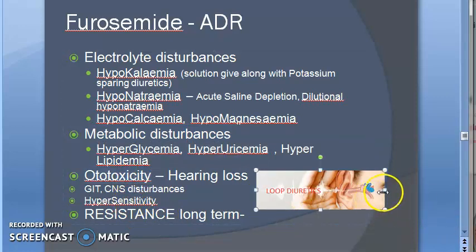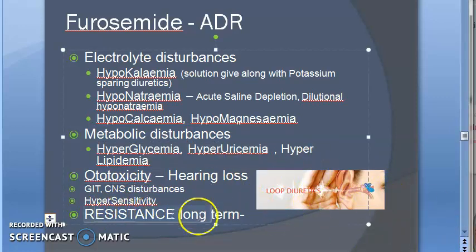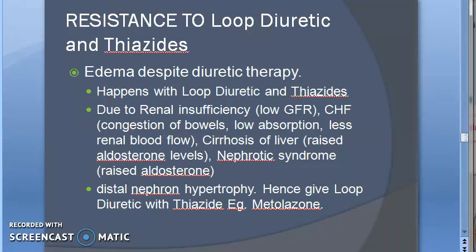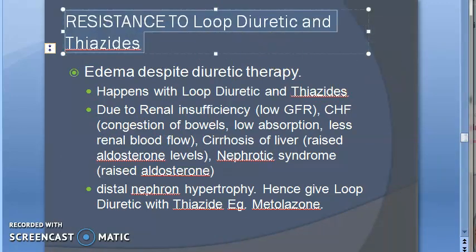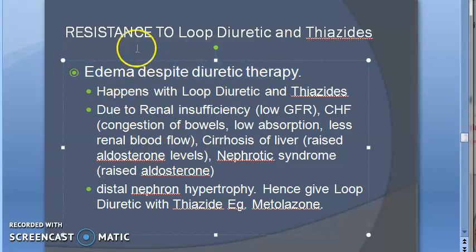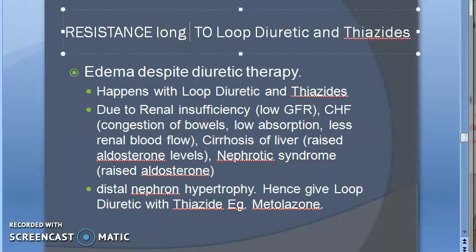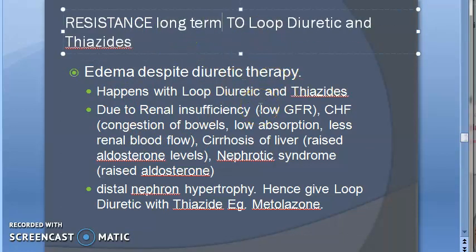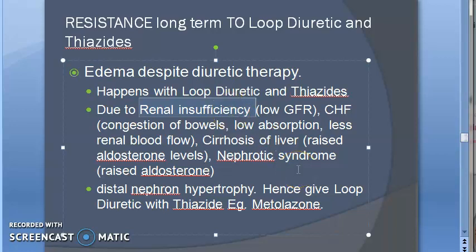Ototoxicity — hearing loss — can happen because of the impaired electrolyte balance caused by loop diuretics. Lastly, resistance can happen and this is very important. Resistance to loop diuretics and thiazides can both occur. Over the long term, even though you are giving these diuretics, there will still be edema — that is because of renal insufficiency, meaning the kidney itself is not able to filter adequately, so the diuretics are not working.